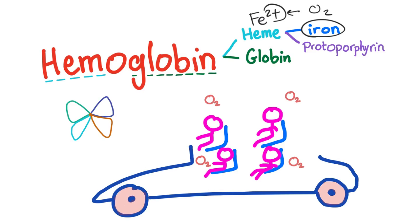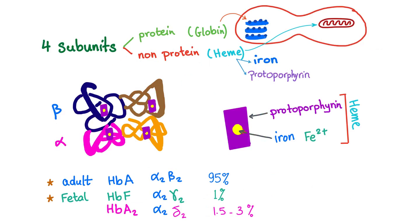And please remember that hemoglobin looks like a butterfly, four different subunits. We have four protein subunits and four non-protein groups or heme groups. So the protein is the globin and the non-protein is the heme.